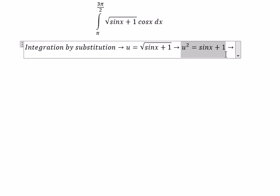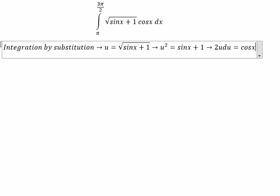We take the first derivative of this. So you get 2u du equals cosine x dx.